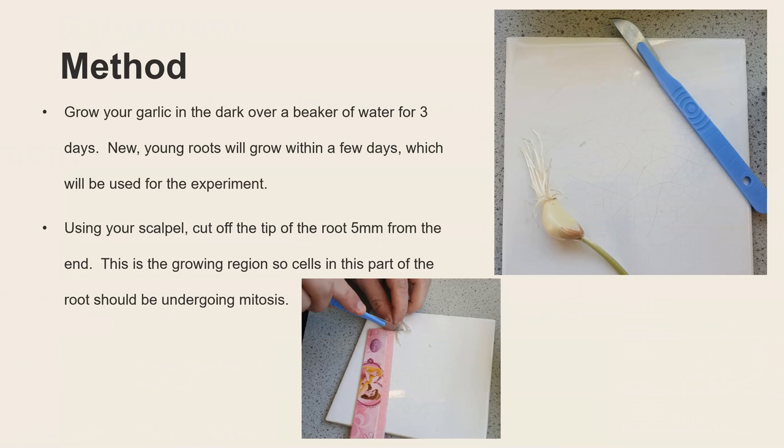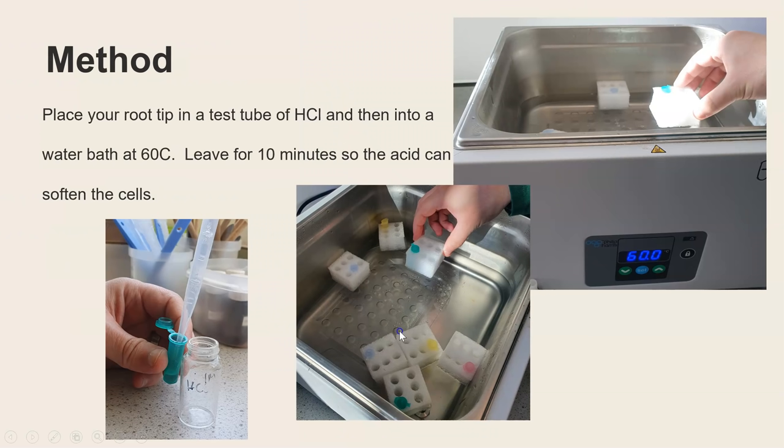So let's have a look at the method. The first thing you need to do and if you're at school the technician would have done this stage for you is grow your garlic or onion on top of a beaker of water for about three days and that can just be a regular onion, regular garlic clove and after three days in water these new roots will start to grow and that is what you need for the experiment. So once you have these roots then you can do the experiment and you use a scalpel to cut off the last five millimetres and that's what we can see here with this lovely ruler that one of the sixth formers was using when I took this photo and the last five millimetres as we said that's where mitosis is happening and you need to be really careful when you're using the scalpel because it's very sharp so you cut away from you to be safe.